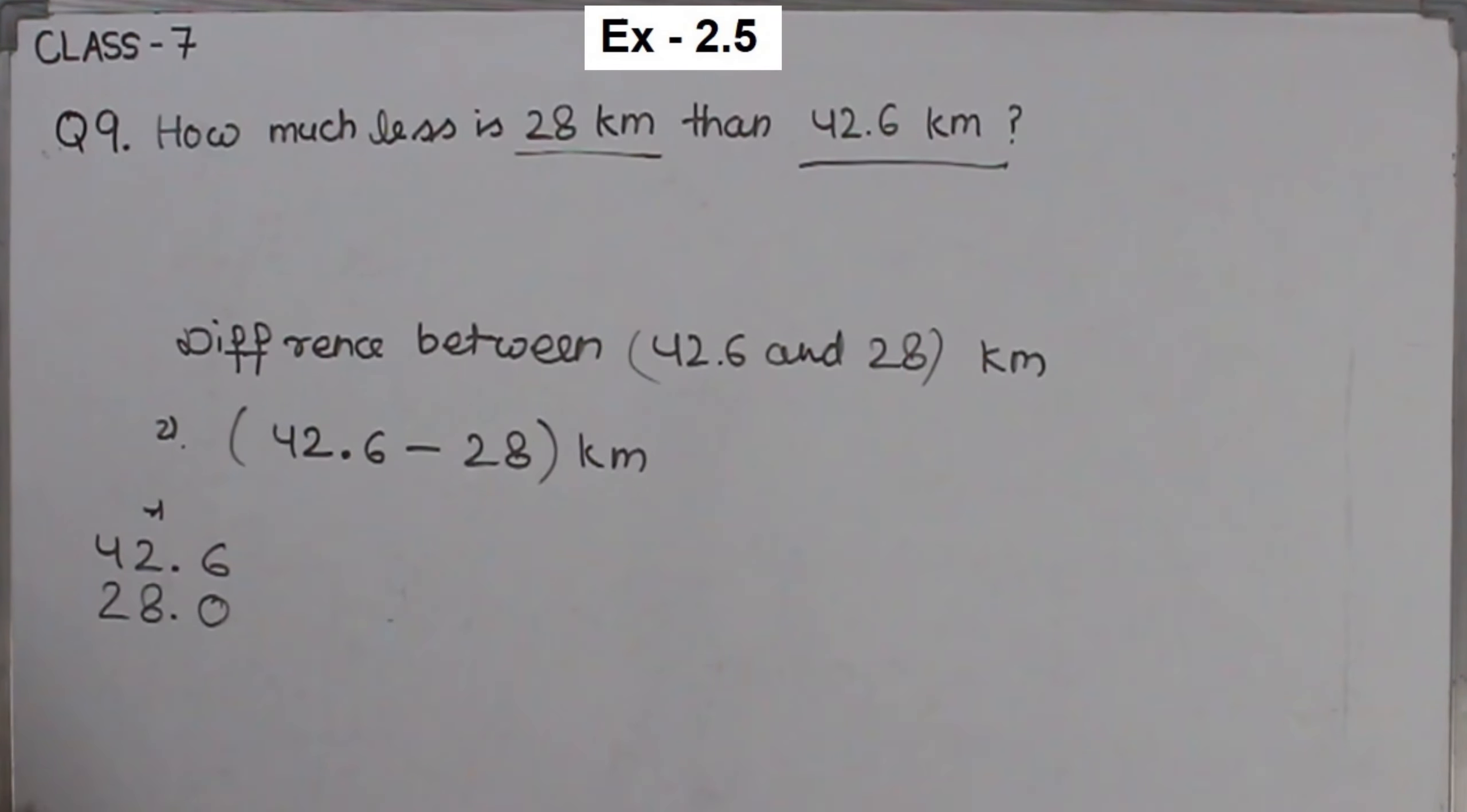Now for making it equal we have to put decimal and then the zero. So we start subtracting, 6 minus 0 is 6. Now the decimal. 2, we will take the carrying. It is now 12 and here is the 3. 12 minus 8 is 4.